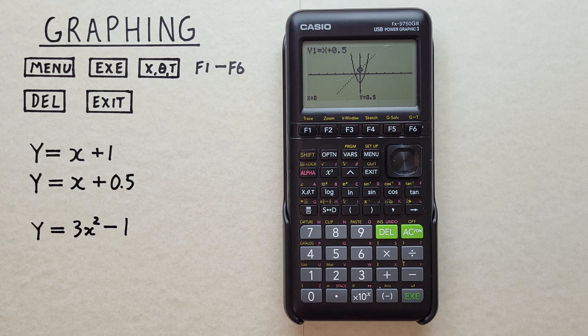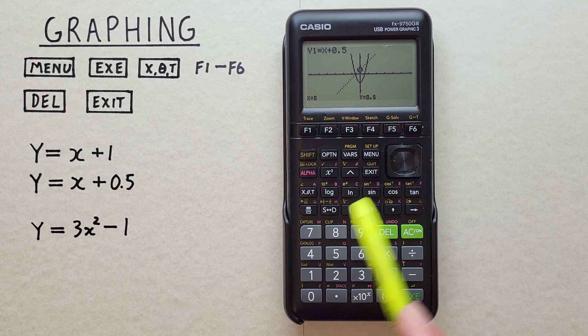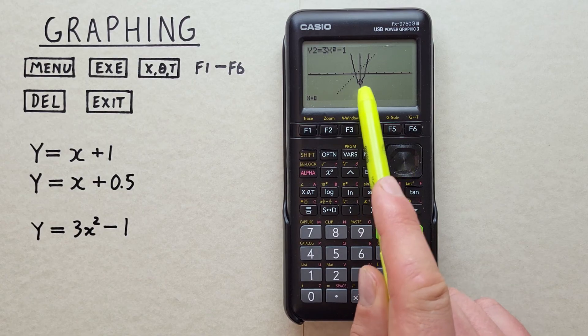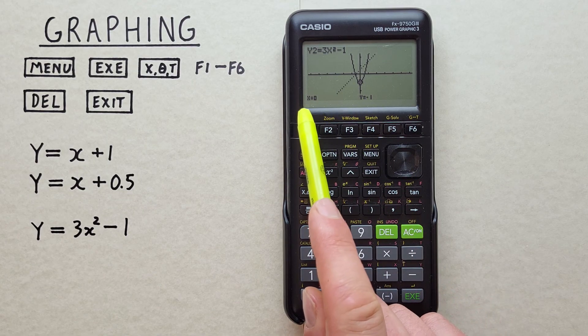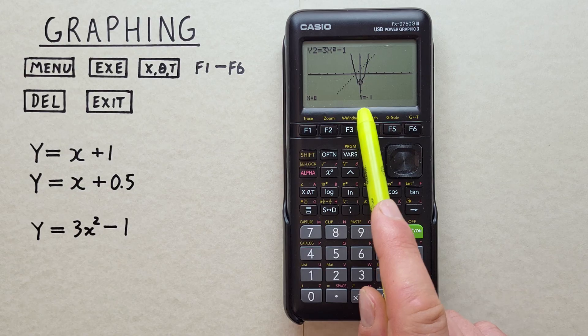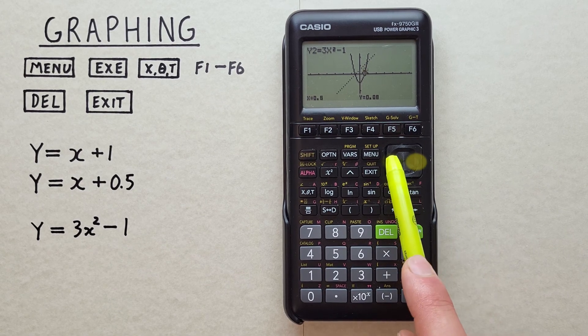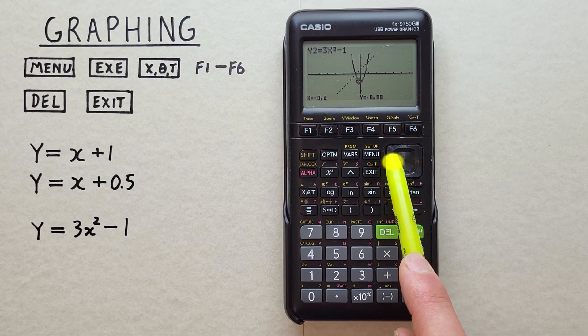If we want to scroll over to the other function, we can just hit the up or down arrow. So if we hit down, our cursor is jumped to our other function, where X equals zero and Y equals minus one. And again, we can scroll along that function to determine our coordinates.